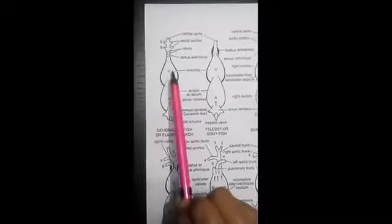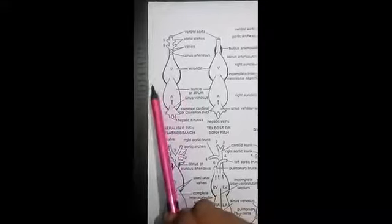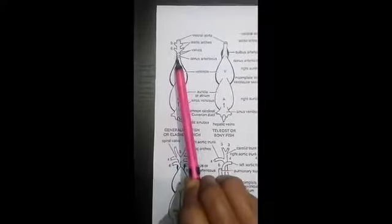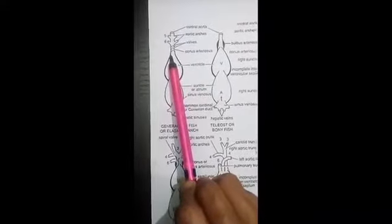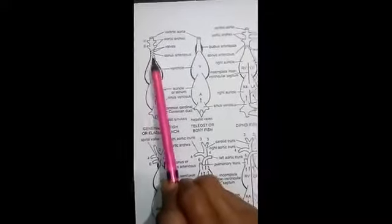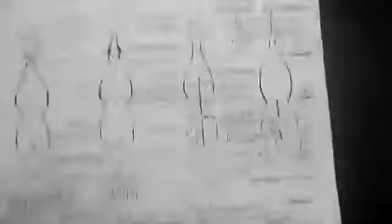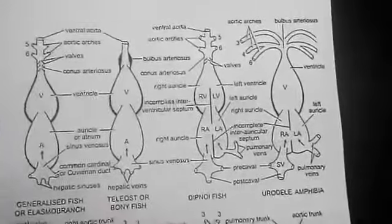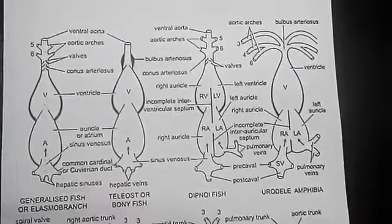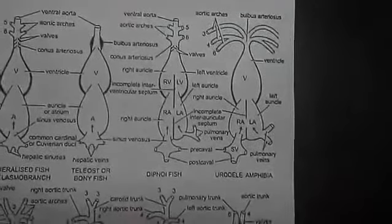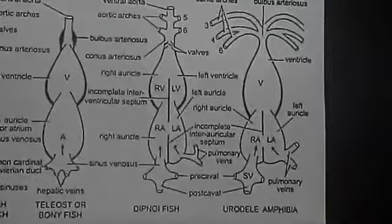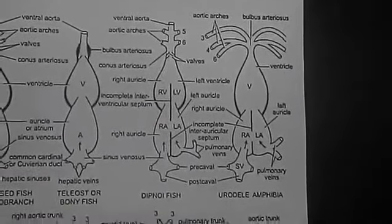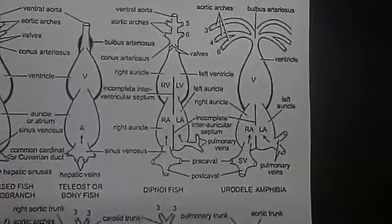The thick-walled muscular ventricle opens into a narrow conus arteriosus containing valves in two series. Pericardial cavity of elasmobranchs communicates with the body cavity through two perforations in the transverse septum. That is, the two chambers, pericardial cavity and abdominal cavity, they are not completely separated.